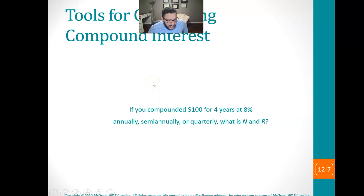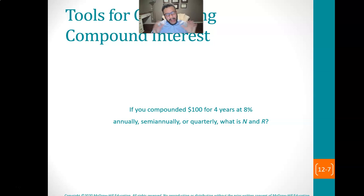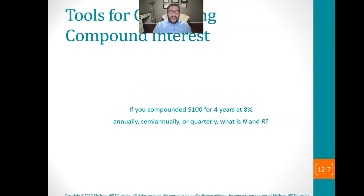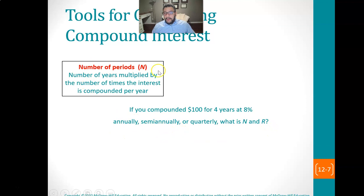We won't really be calculating this by hand. The problem is what happens when you're trying to do an investment that's 20 years compounding quarterly — you'd have to do that for 80 periods, which is not feasible. So we use a shortcut by looking things up on a table. In this chapter, the main charts we use are the future value charts and the present value charts. The key is to figure out two things first: N and R — the number of periods and the rate per period.